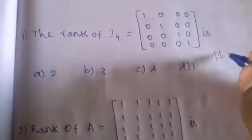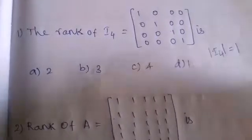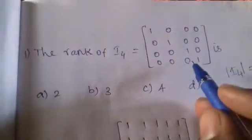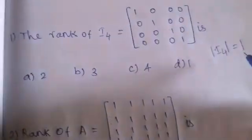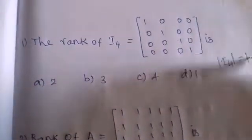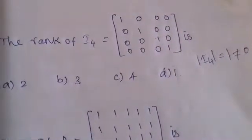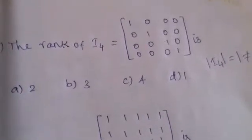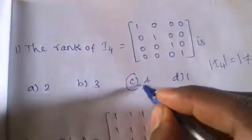For this matrix, the determinant of I₄ is equal to 1, which is not equal to 0. So the rank of the matrix is n, that is 4.